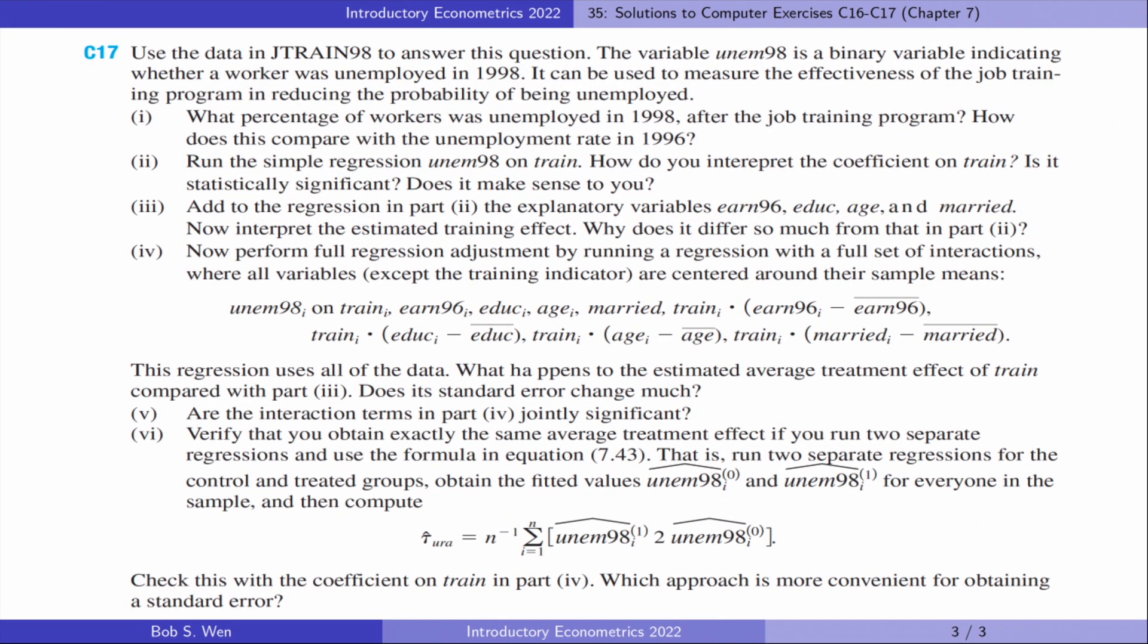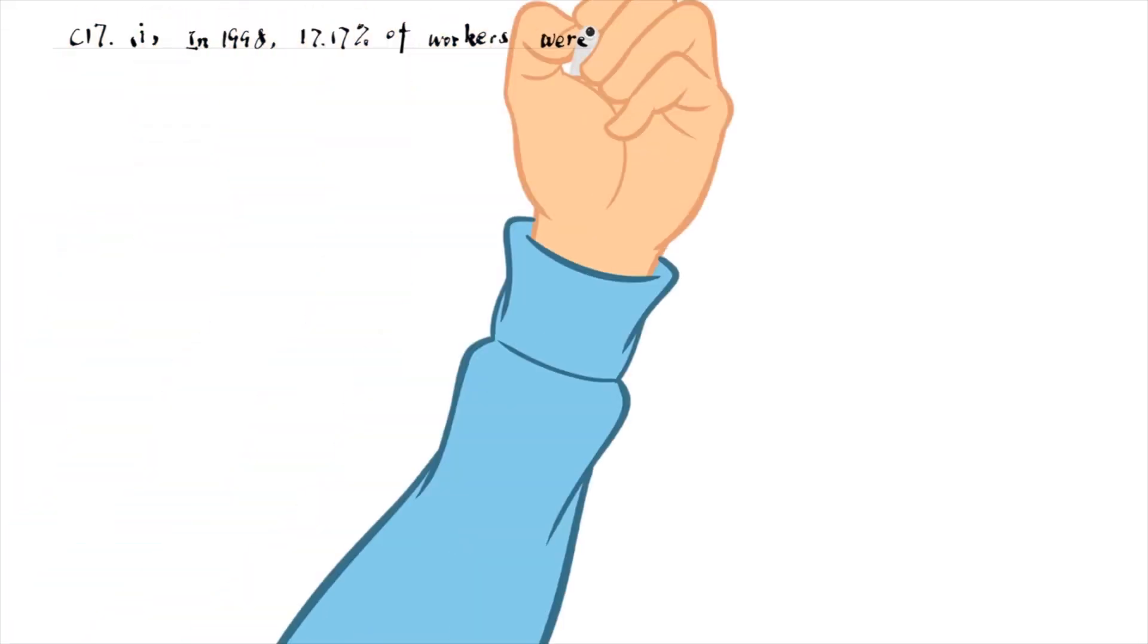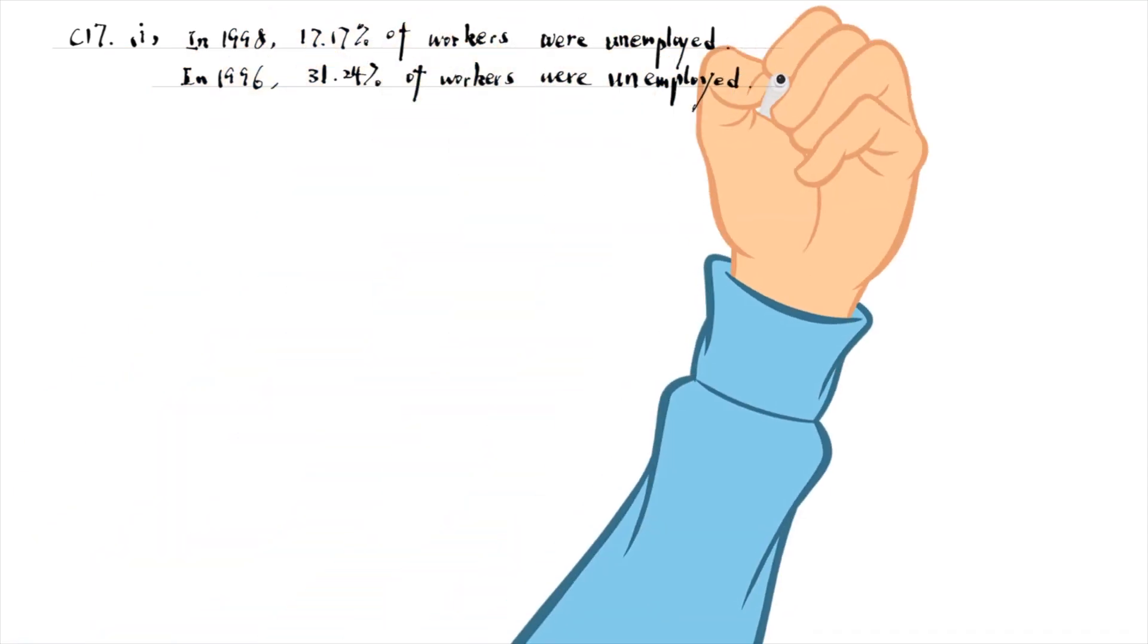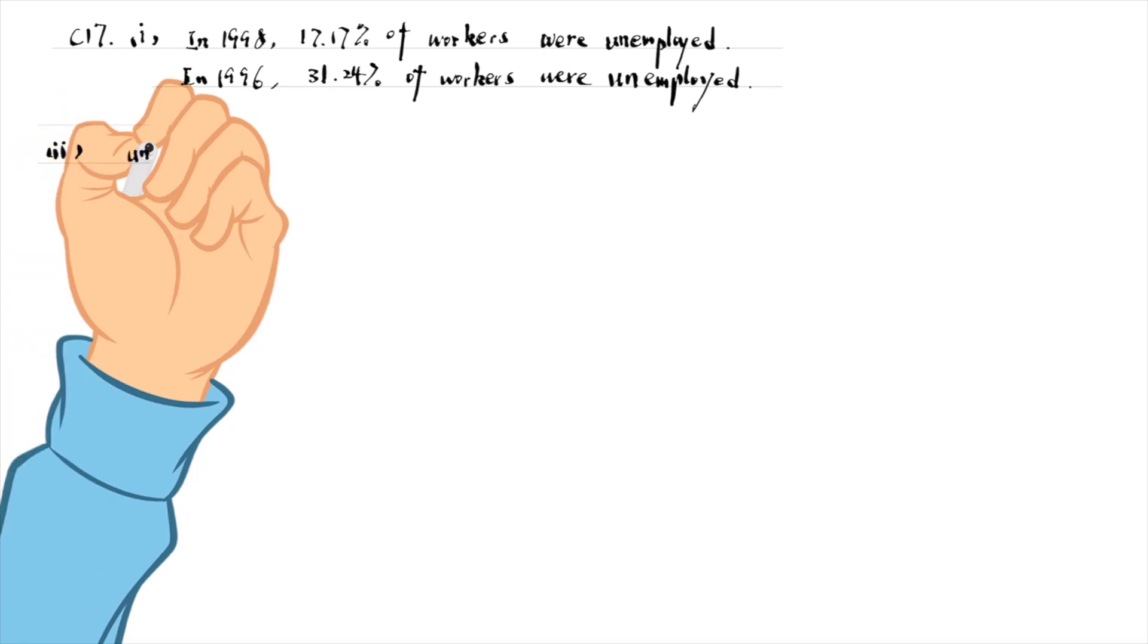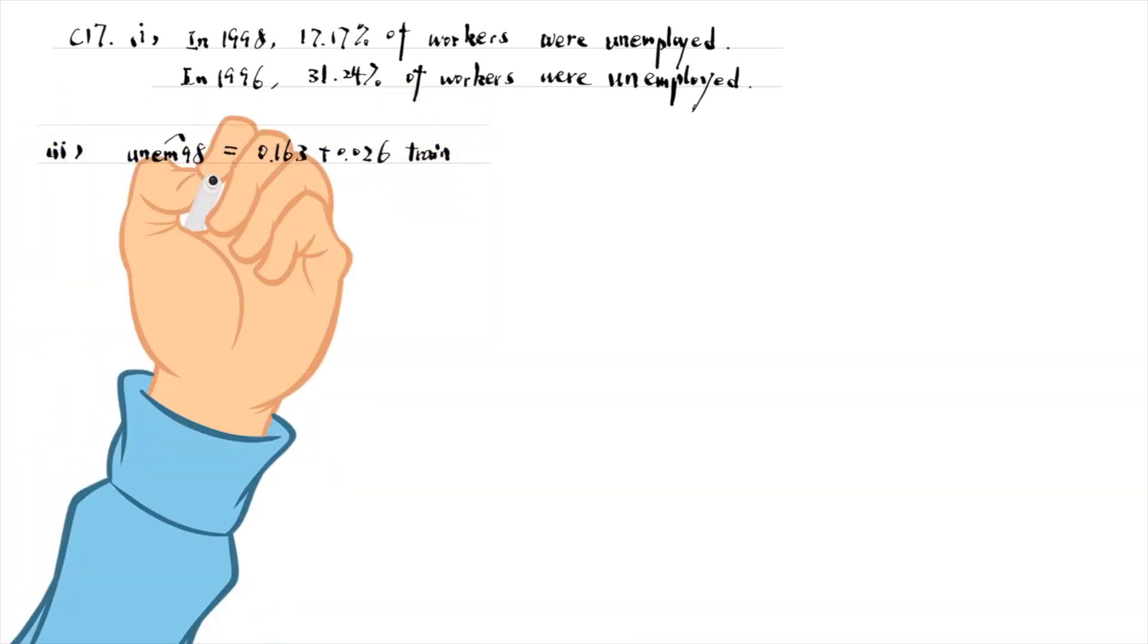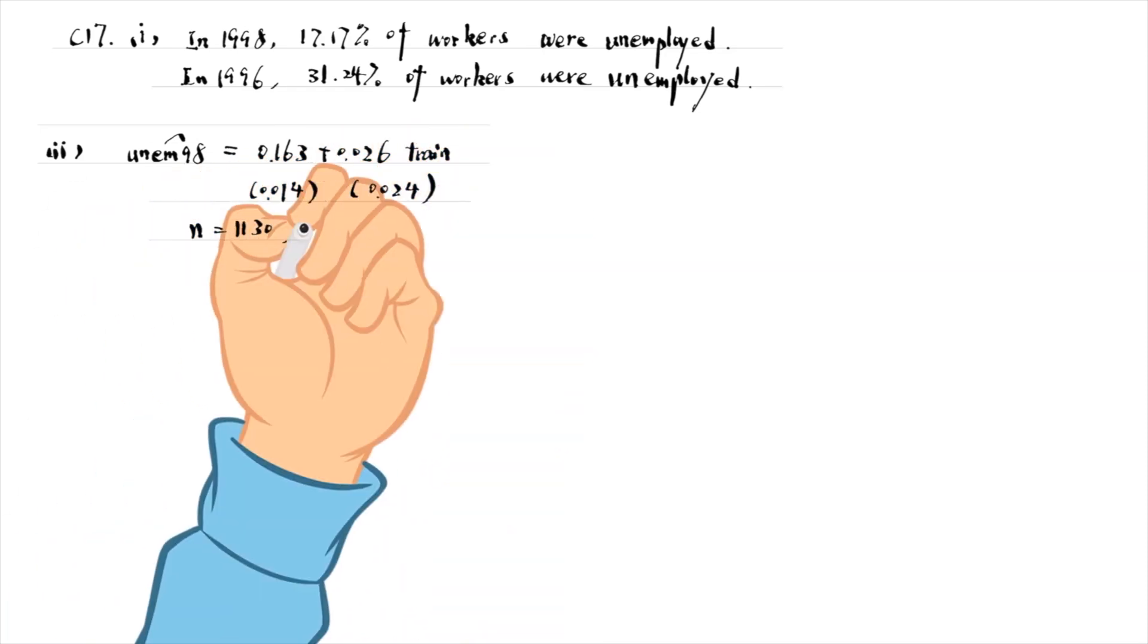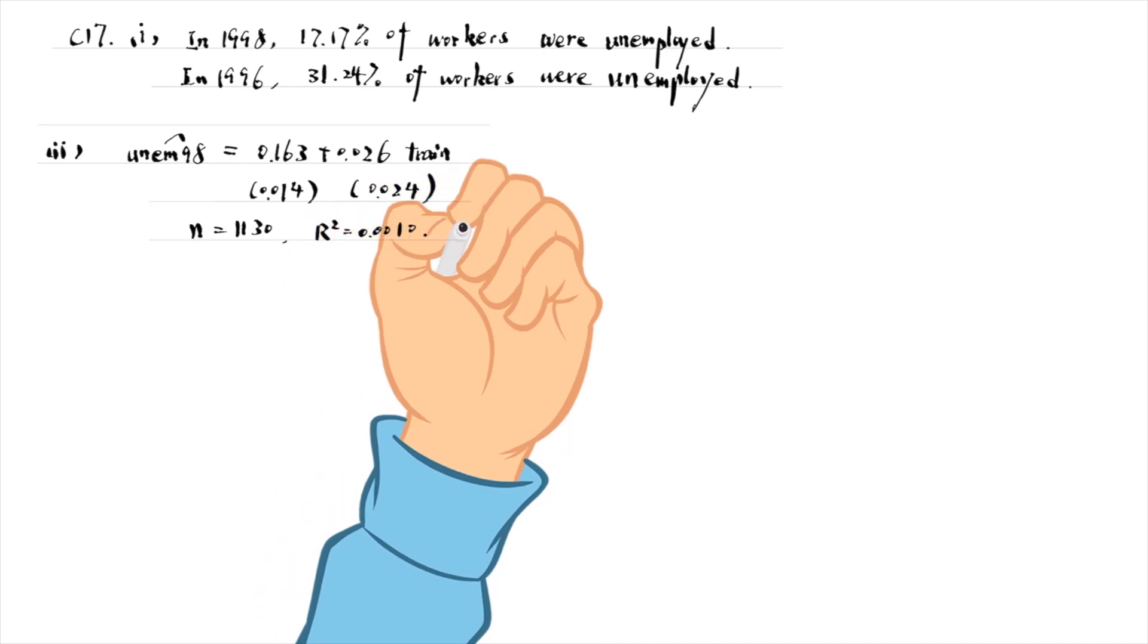Let's find answers to computer exercise number 17. In 1998, 7.17% of workers were unemployed, while in 1996, 31.24% were unemployed. The percentage of unemployment dropped. It may be due to job training or other factors. The simple regression gives an estimate of 0.026. It implies that the training program and unemployment are positively correlated. It is not statistically significant at any conventional level, with a t-statistic of 1.08 and a p-value of 0.28.